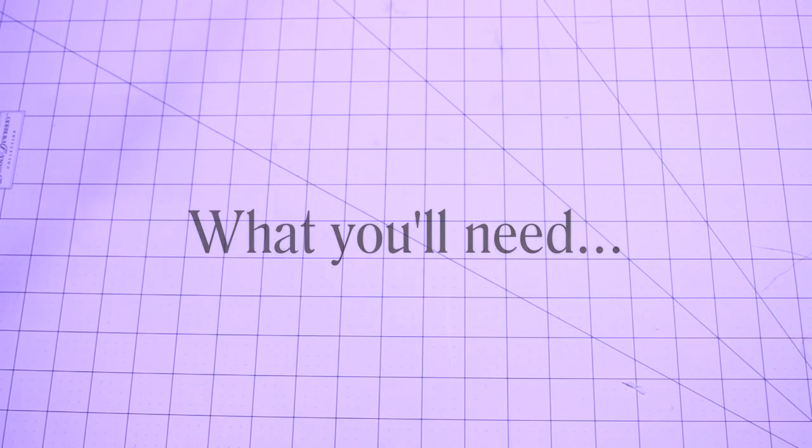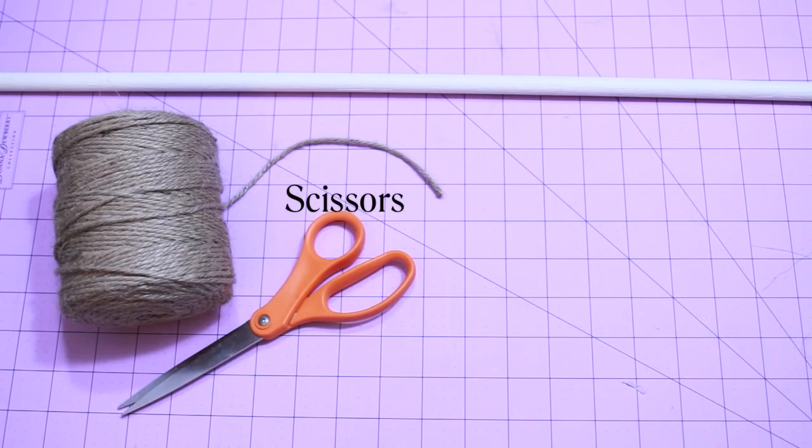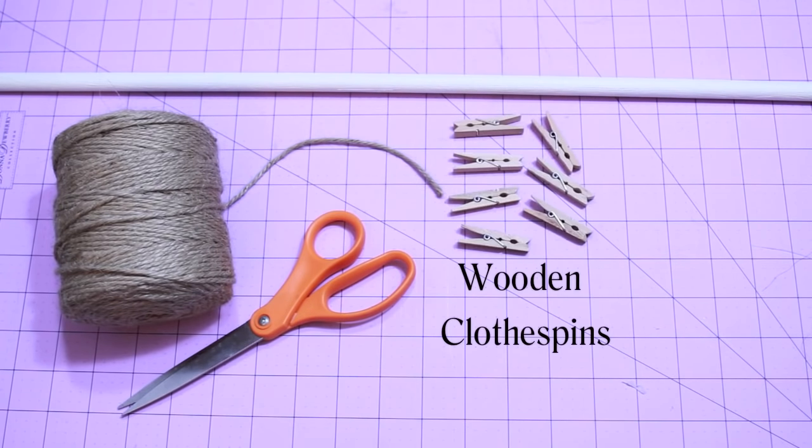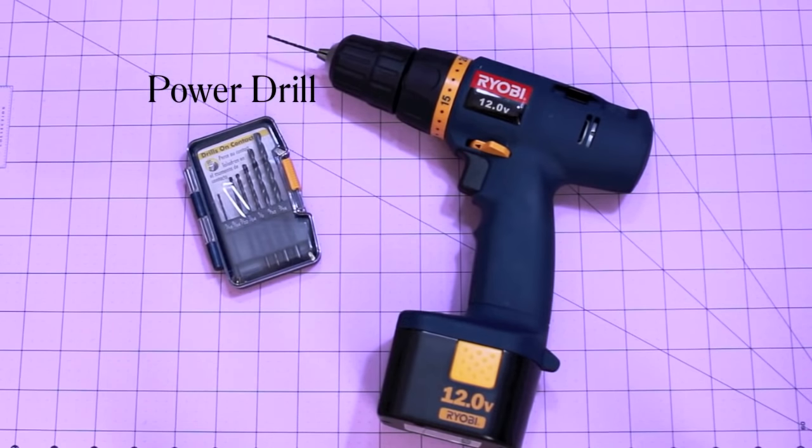So here are some of the items that you'll need: 1.5-inch dowel, twine, scissors, wooden clothespins, bar pins, and glue gun. You'll also need to borrow your dad's power drill. So let's begin.